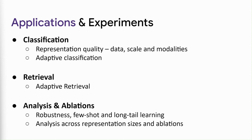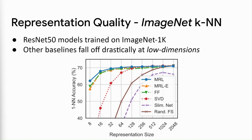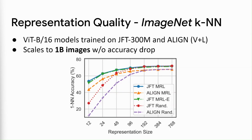We showcase the use of Matryoshka representations for large-scale classification, retrieval, and further analysis and ablations. On ImageNet classification models, ResNet-50 trained with MRL is as accurate as independently trained counterparts across every single granularity, while post-hoc compression methods fall off drastically for low-dimensional representations. We find similar observations for representation quality evaluated using k-nearest neighbors for ResNet-50 models on ImageNet. MRL's observations also translate to new models like ViT and web-scale datasets like JFT, along with new representation settings involving vision plus language.